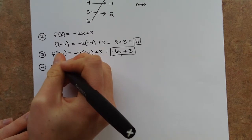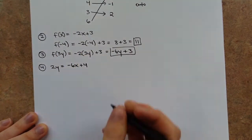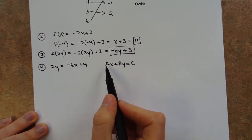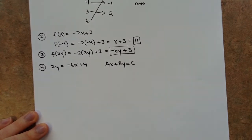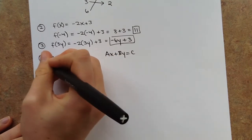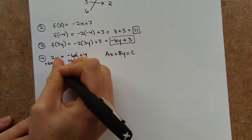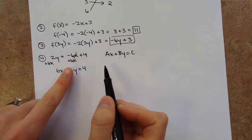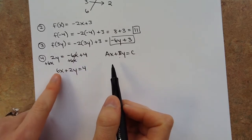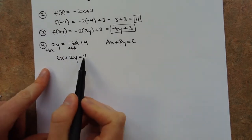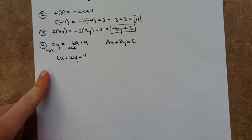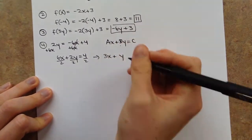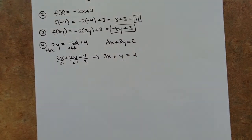For number 4, I need to write 2y equals negative 6x plus 4 in standard form. Standard form is ax plus by equals c, with two conditions: the coefficient of x must be positive, and the three numbers can't share a GCF. First, add 6x to both sides to get 6x plus 2y equals 4. The coefficient of x is positive — good. But 6, 2, and 4 are all multiples of 2, so divide every term by 2.